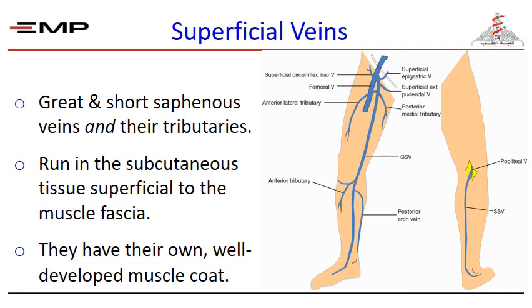The skin and other tissues superficial to the deep fascia drain into the superficial system into two main superficial veins: the great saphenous vein and the lesser or short saphenous vein. The great saphenous vein receives tributaries from the anteromedial aspect of the limb and lower anterior abdominal wall, and penetrates the fascia in the groin to drain into the femoral vein of the deep venous system. The short saphenous vein drains the posterior part of the leg and passes through the deep fascia into the popliteal vein of the deep venous system.